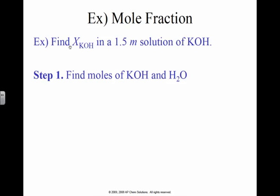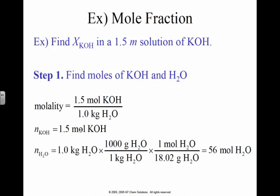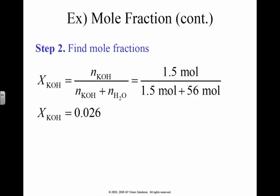Find the mole fraction of a 1.5 molality solution of potassium hydroxide. The first thing I need to do is find the moles of potassium hydroxide and water. So once again, if I don't have any numbers, make numbers up. Doesn't that mean I have 1.5 moles of KOH for every 1 kilogram of water? So if I have moles of KOH, I can convert that to grams. If I have 1 kilogram of water, I can convert that to moles. Actually, I don't want to convert this to moles, because I want mole fraction. So I've got 1.5 moles KOH, 56 moles of water. That's a total of 57.5 moles altogether.